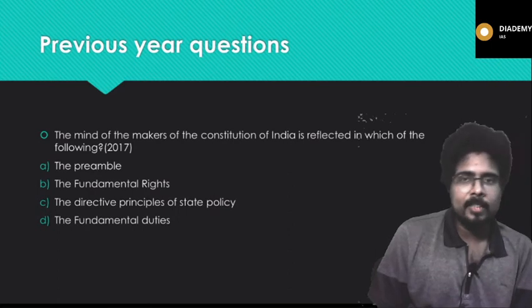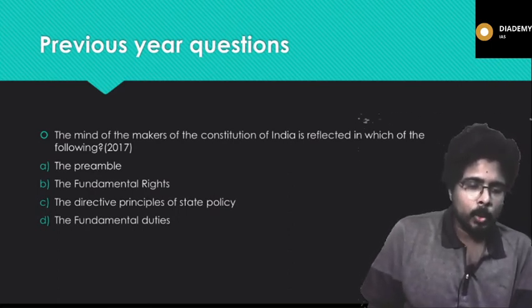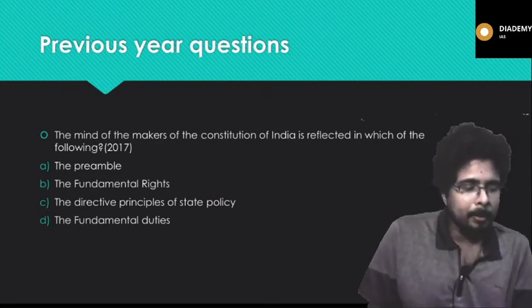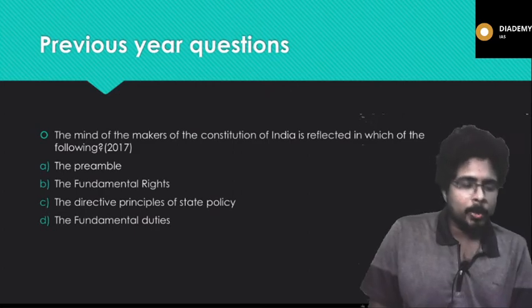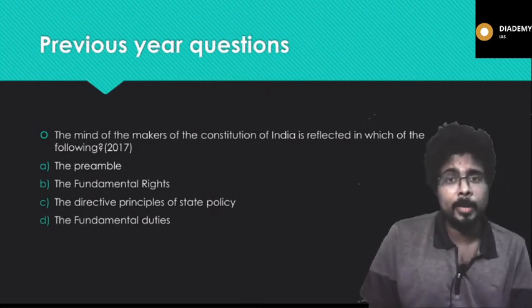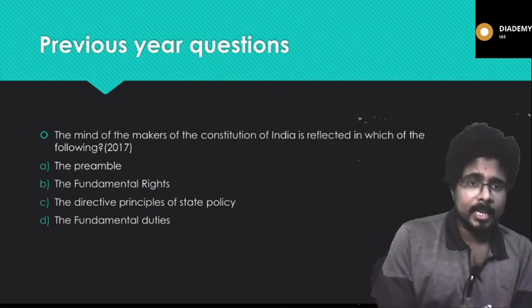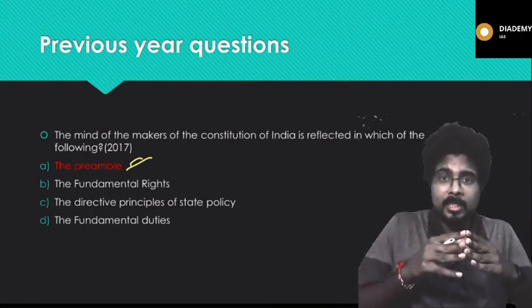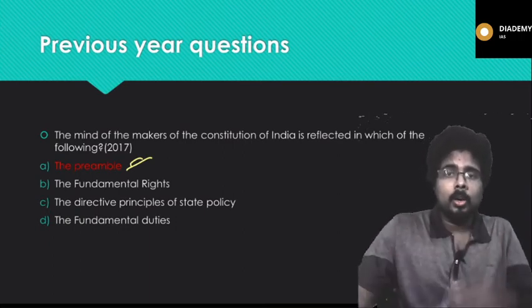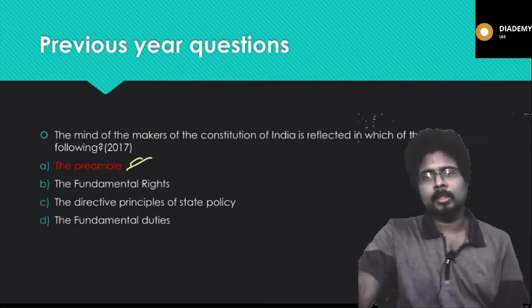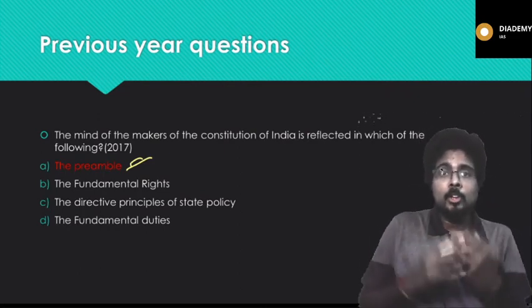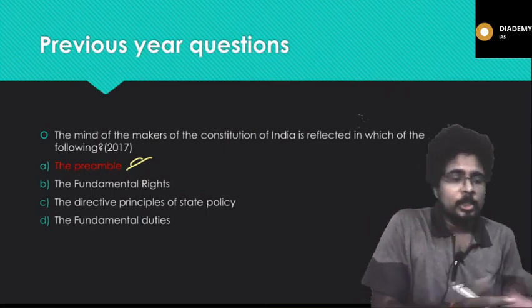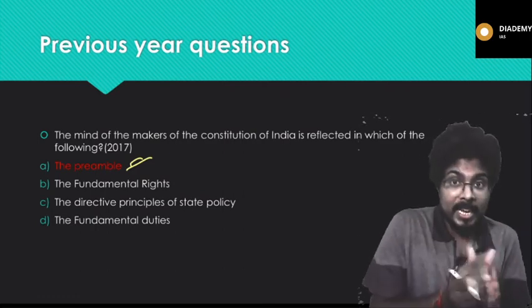The 2017 question asks: 'The mind of the makers of the Constitution of India is reflected in which of the following?' Options: a) Preamble, b) Fundamental rights, c) Directive principles of state policy, d) Fundamental duties. The correct answer is Option a — the preamble. The preamble is the crux of the constitution as envisioned by our forefathers. What is their objective? What is the nature of the constitution they want? Everything is shown in the preamble.